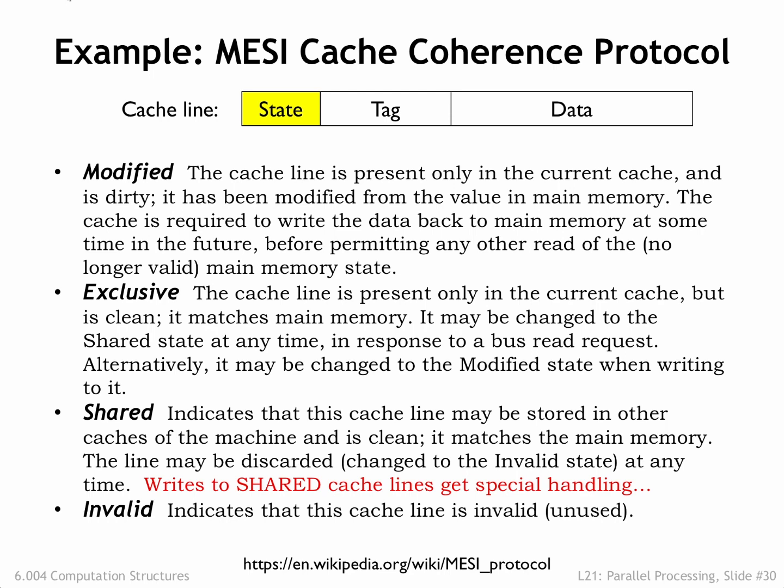When filling a cache from main memory, other caches can snoop on their read request and participate in fulfilling it. If no other cache has the requested data, the data is fetched from main memory and the requesting cache sets the state of that cache line to exclusive. If some other cache has the requested cache line in the exclusive or shared state, it supplies the data and asserts the shared signal on the snoopy bus to indicate that more than one cache now has a copy of the data. All caches will mark the state of the cache line as shared.